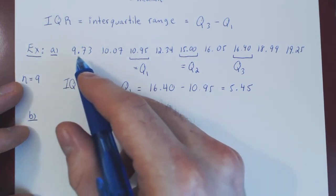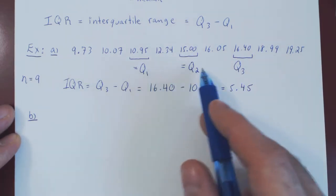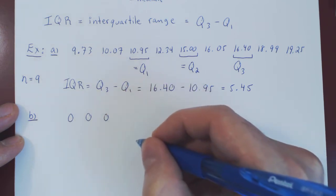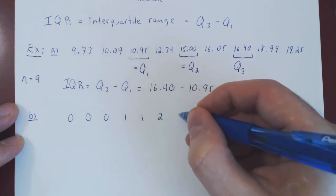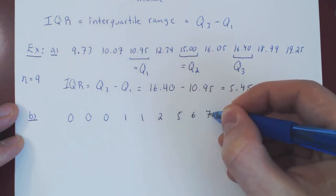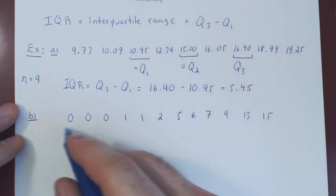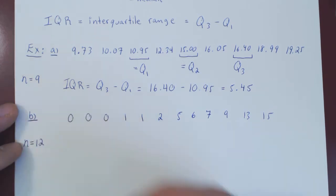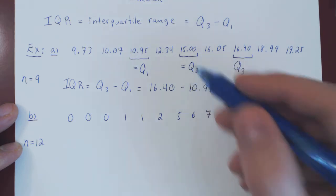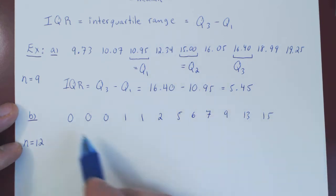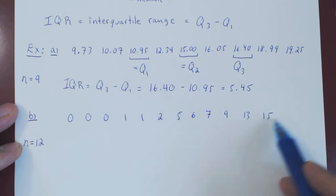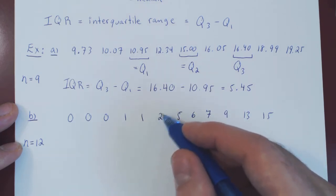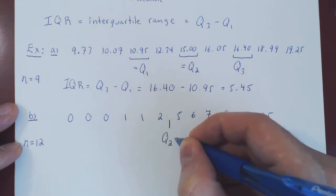Now let's look at one more example where we have an even number of values — 12 values — and see that things will be a little different. We always find the second quartile first. Since there is no single middle value with 12 values, we have the lower 6 and upper 6. The median is the average of the two middle values: 2 plus 5 is 7, over 2 is 3.5, so the second quartile Q2 is 3.5.